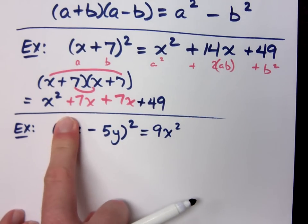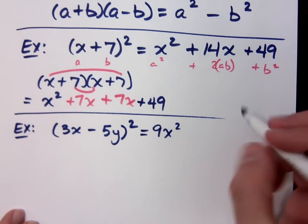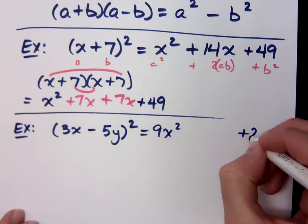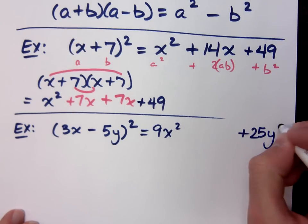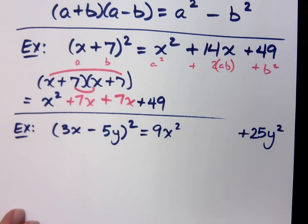If I square this last guy, even though he's a negative, what will I get? Positive. Positive what? 25y. Positive 25y².